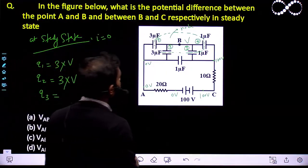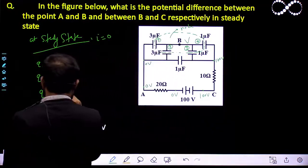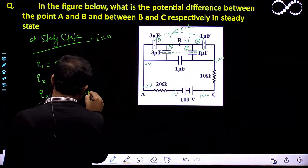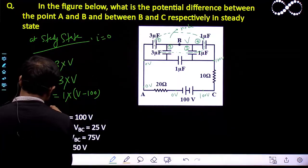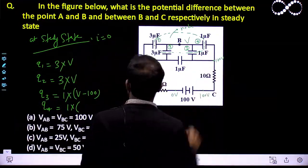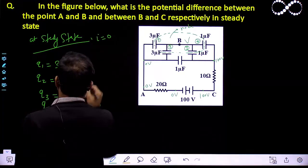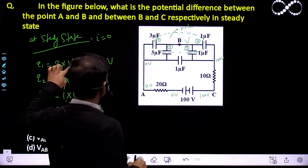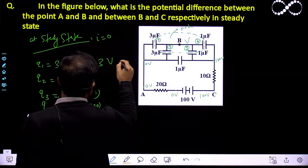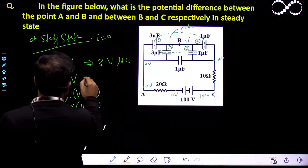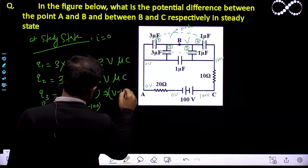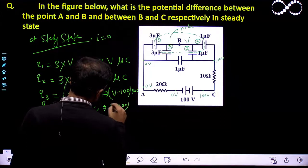Q3: C is 1 here, and the potential difference is V minus 100, since this part is on 100 volts. So Q3 = 1 × (V − 100) = V − 100. Q4: plate 4, C is also 1, and the potential difference is V minus 100. So Q4 = V − 100. In summary, Q1 = 3V microcoulombs, Q2 = 3V microcoulombs, Q3 = (V − 100) microcoulombs, and Q4 = (V − 100) microcoulombs.